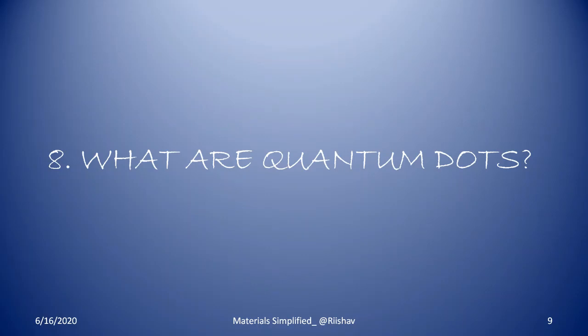What are quantum dots? As mentioned before, quantum dots are examples of zero-dimensional nanomaterials — zero-dimensional nanomaterials are also known as nanoparticles. Quantum dots are man-made nanoscale crystals used to transport electrons. When UV light hits these semiconducting nanoparticles, they can emit light of various colors. They are used to alter optical properties.